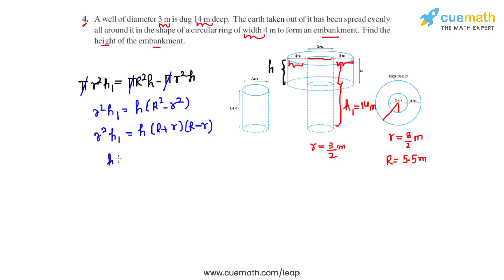From this, we rearrange and get the height of the embankment: h = r²h₁ / [(R + r)(R - r)].